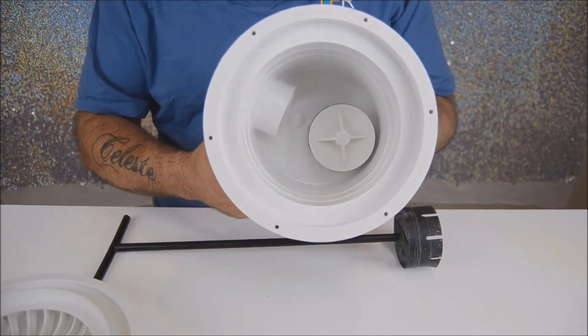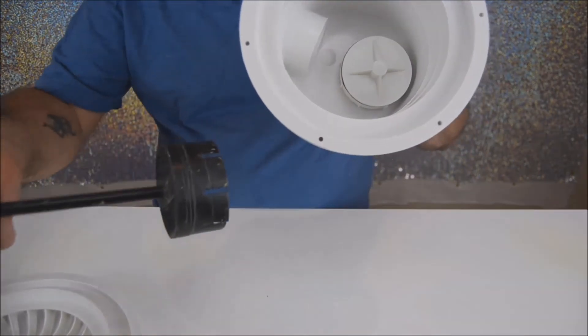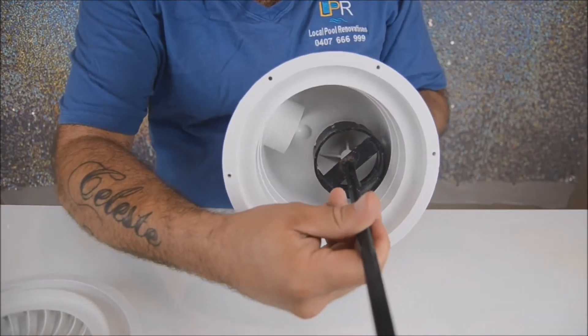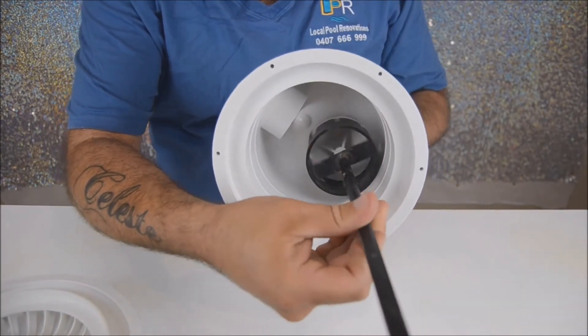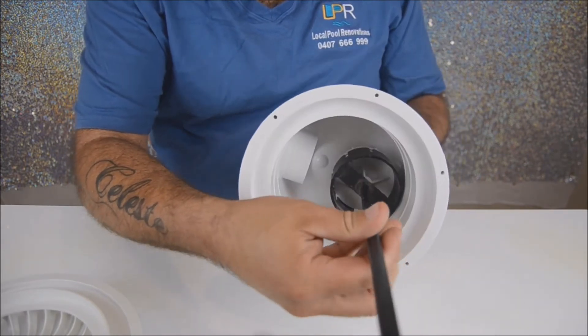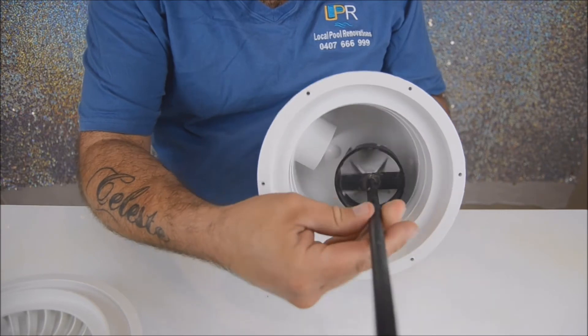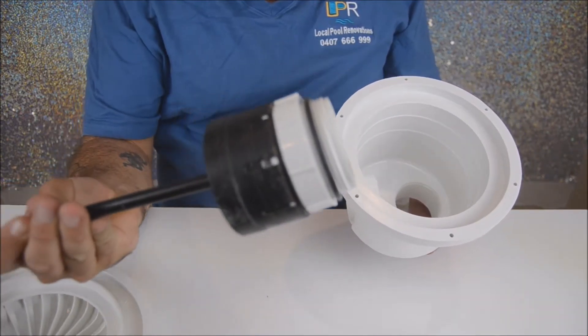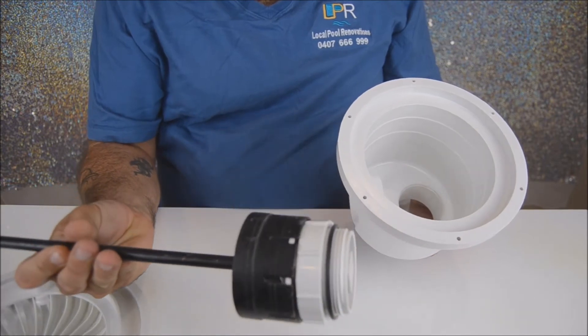Once you've located your hydrostatic valve, you grab your hydrostatic valve removal tool, place it in, and then start to twist out your hydrostatic valve until the hydrostatic valve has been completely removed.